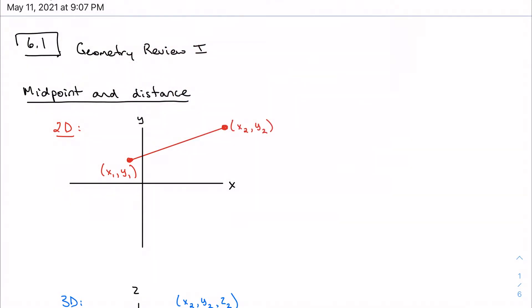When we talk about midpoint and distance in two dimensions, the midpoint is given by just the average of the x coordinates and the y coordinates. So x1 plus x2 over 2 and y1 plus y2 over 2. It gives me a point, so here is my midpoint M.